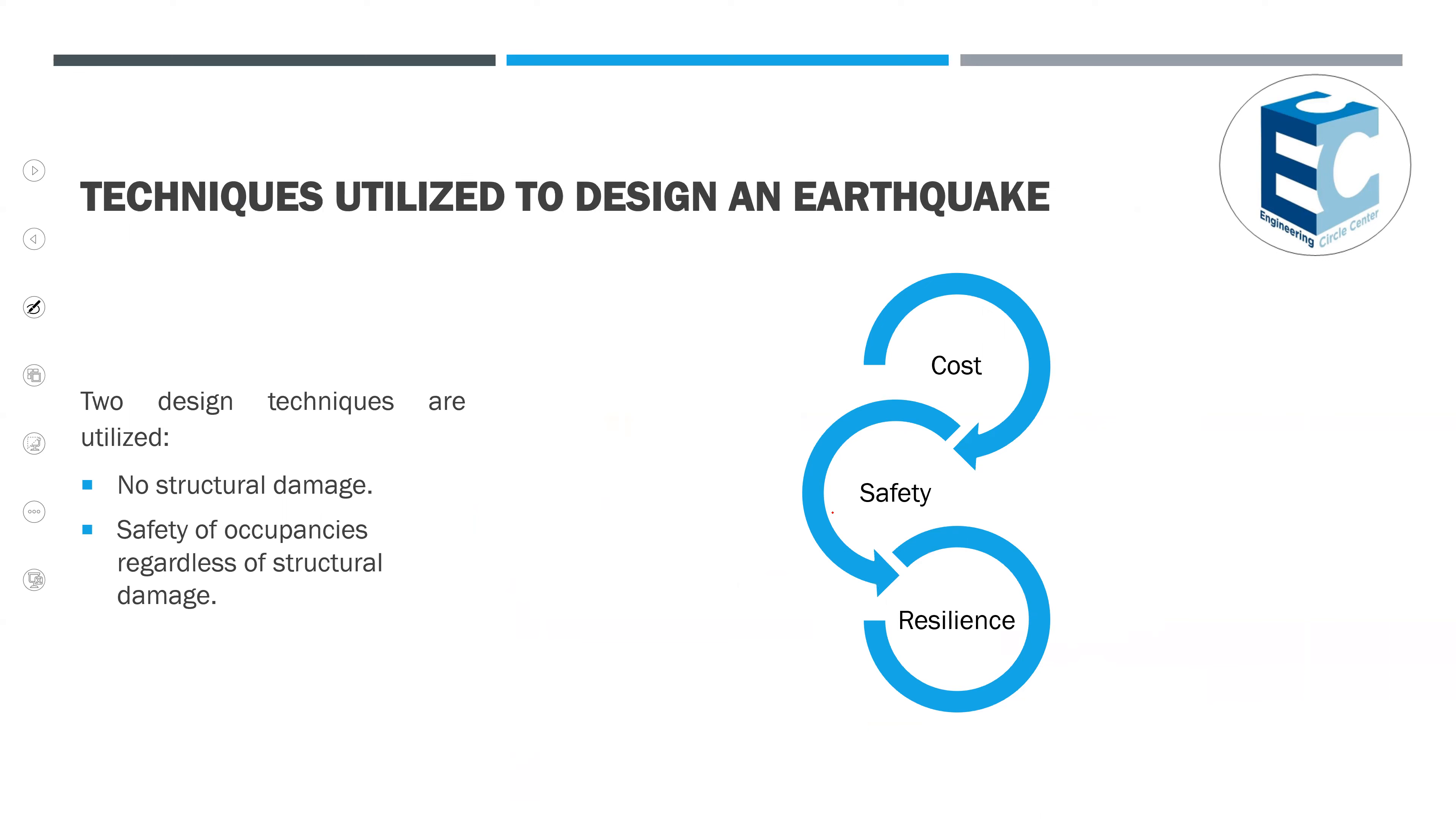There are two design techniques I usually use when I want to make design for the building. The first thing is that I ensure that I don't have structural damage. In this case, if I want to make this, my cost will be a lot, with that it will be safe a lot, but the cost will be high. The second thing is that I ensure that I have safety and the structural damage is acceptable.